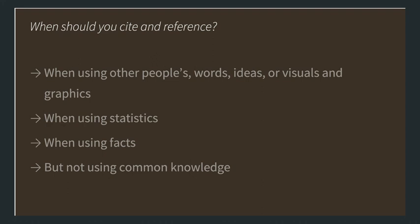However, we do not need to cite and reference common knowledge. Common knowledge could be something like everyone knows that the Titanic sunk on its first voyage. However, not everyone knows how many people were rescued, nor how many lifeboats were on the Titanic, so we would need to cite and reference that information. If knowledge is new to you but you expect your reader to know about it, you still need to cite and reference this, so that the reader knows that you have done your research and that you fully understand the topic.